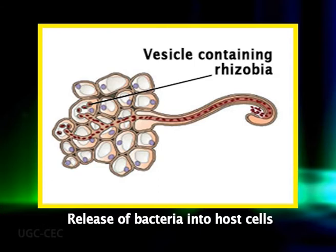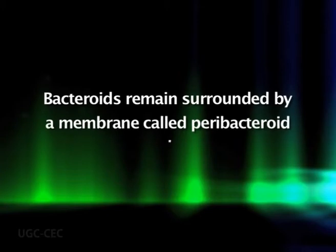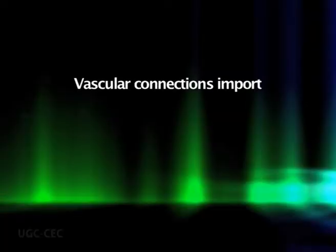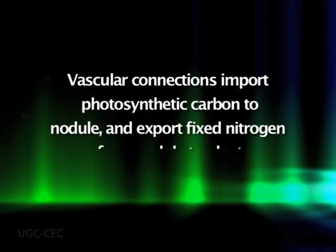After the formation of the infection thread, the third process begins: the release of bacteria. This is the final step in the infection process whereby the bacteria are released into the host cells. The membrane of the infection thread bursts to form small vesicles, each containing one or more individual bacteria. Shortly after release, the bacteria cease dividing, enlarge, and differentiate into specialized nitrogen-fixing cells called bacteroids. The bacteroids remain surrounded by a membrane called the peribacteroid membrane. As the nodule enlarges and matures, vascular connections are established to import photosynthetic carbon into the nodule and export fixed nitrogen to the plant.